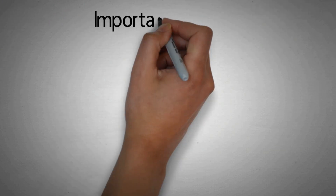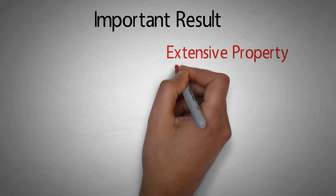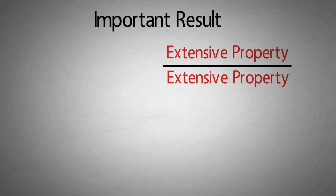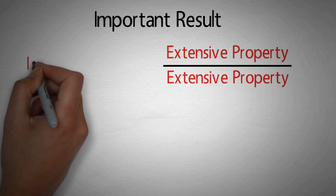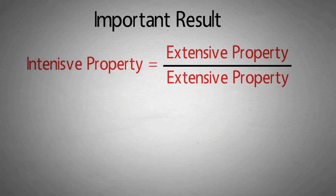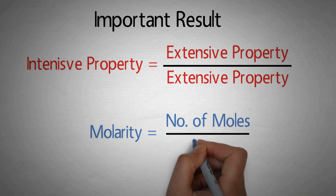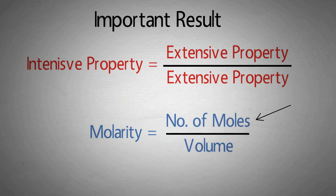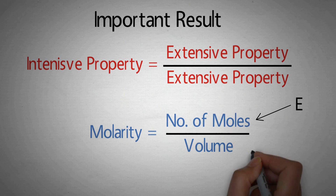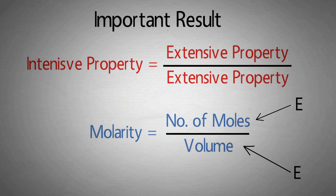Now, an important conclusion: what would happen if we divide an extensive property with another extensive property? We will get an intensive property. Example: molarity = moles/volume. Number of moles is an extensive property, and volume is also an extensive property. So molarity is extensive property divided by extensive property — so it has to be an intensive property. And which is true, molarity is an intensive property.